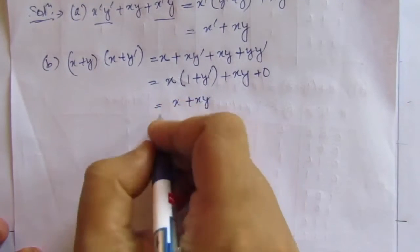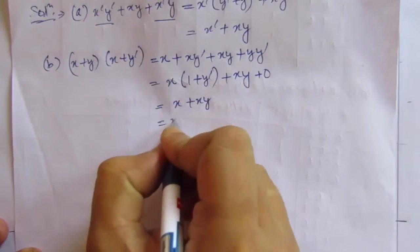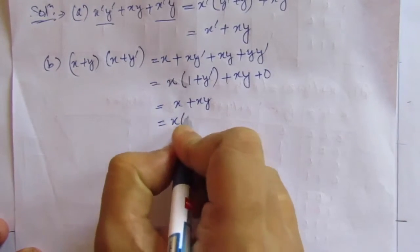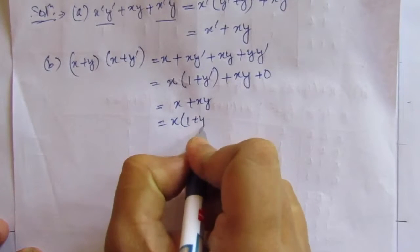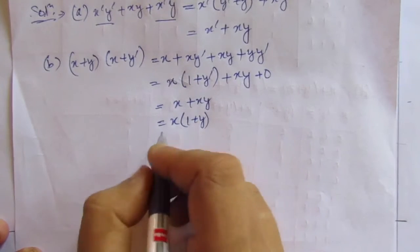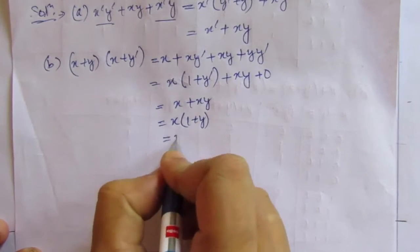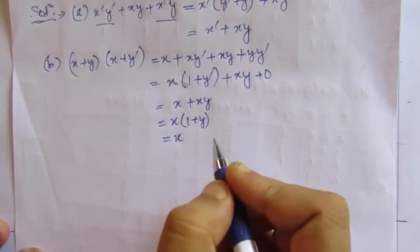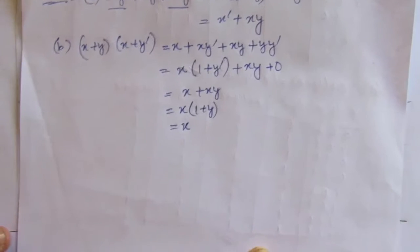From x + xy, if we take x common, we get x(1 + y). Since 1 + y equals 1, the answer simplifies to x.